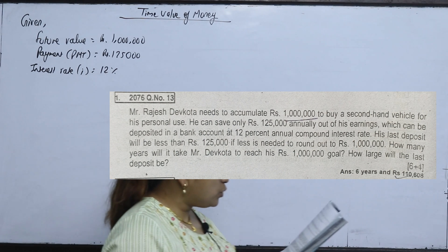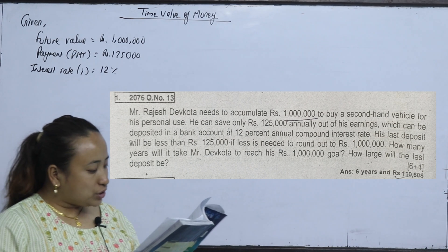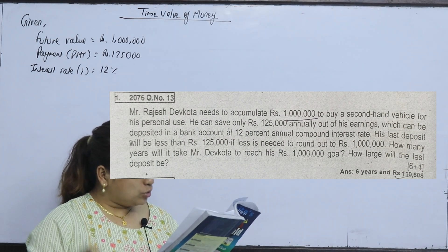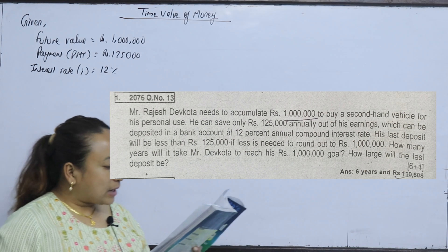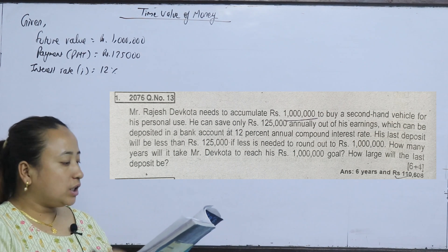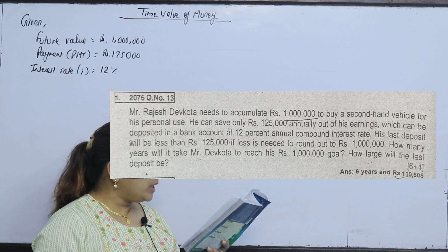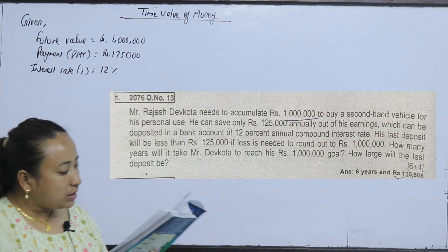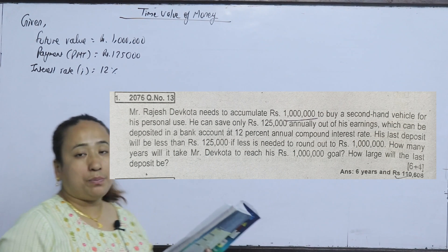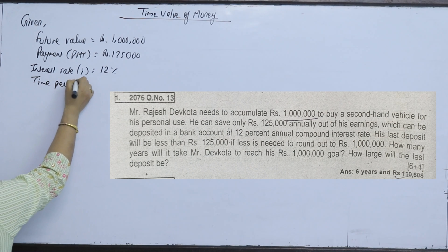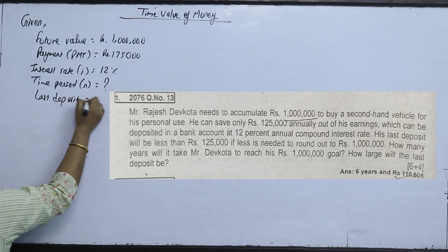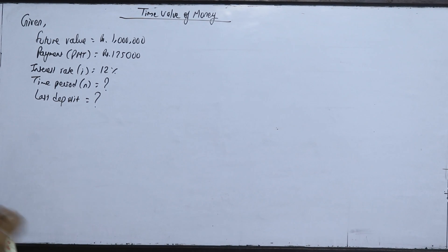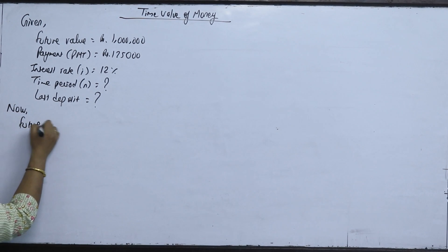The last deposit will be less than Rs 1,25,000. How much will the last deposit be? The next factor may be the future value, and we need to use the payment for each year.